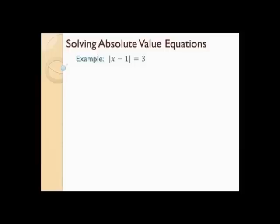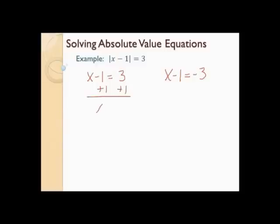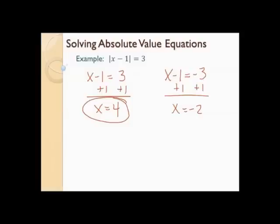Let's solve the absolute value equation: absolute value of x minus 1 equals 3. First, isolate the absolute value — in this case it already is, since there's nothing else on the left-hand side. Second step, make two equations: x minus 1 equals positive 3, and x minus 1 equals negative 3. We're making two equations, one positive and one negative, because everything inside the absolute value can equal positive 3 or negative 3. Add 1 to both sides of each: x equals 4, and x equals negative 2. Plug in 4: 4 minus 1 is 3, absolute value of 3 is 3 — that works. Try negative 2: negative 2 minus 1 is negative 3, absolute value of that is positive 3 — that works. So those are my two answers.